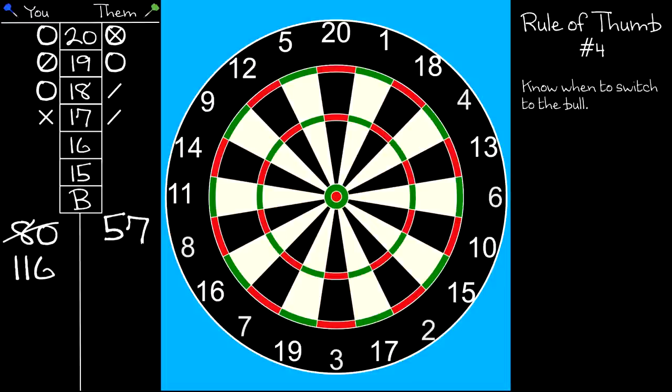Rule of thumb number four is know when to switch to the bull. Most of the time, we tend to leave the bull as the last thing to play at. The number wedges are vastly bigger targets than the bull, and you will typically want to try and close them out before your opponent can score on them. However, depending on where the game stands and on how well you're throwing, you might consider throwing at the bull early in the game.